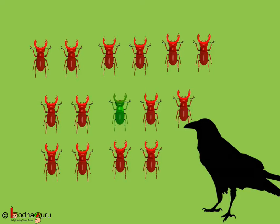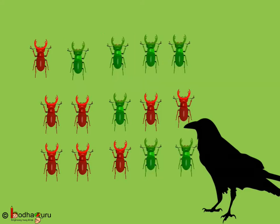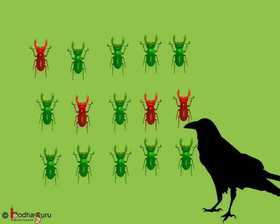So, green beetles survive and pass on the color to the next generation. As green beetles have a higher survival rate, their ratio starts to increase — that is, there are more green beetles compared to the red beetles. Also, the progeny of red beetles mostly gets eaten, so their number decreases.